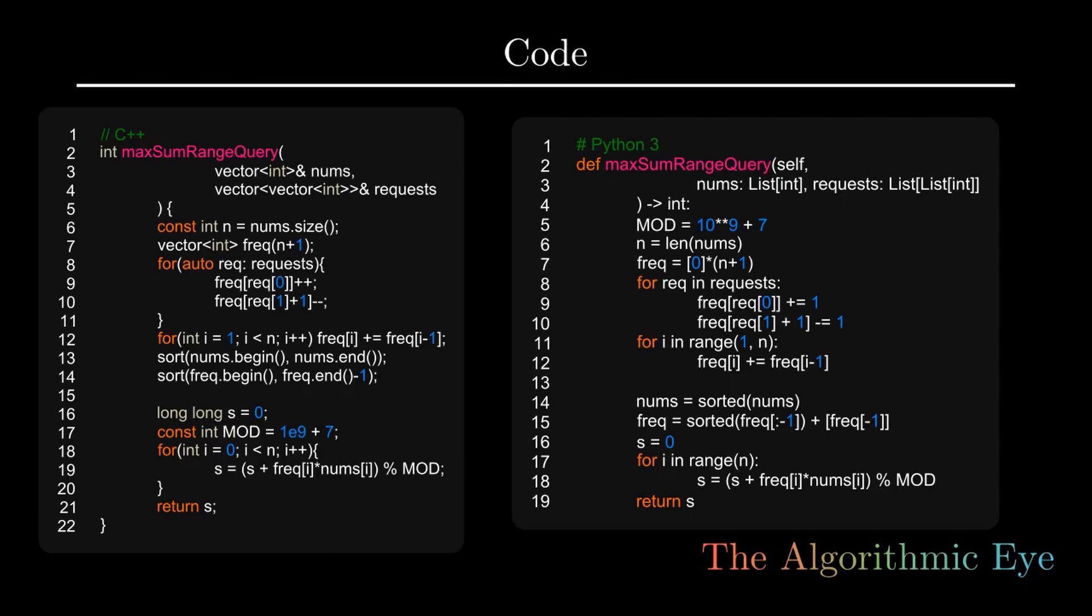Then we sort both nums and our frequency array, and we take the variable s to denote the sum. We take the sum of their products of corresponding indices of nums and frequency, and then we finally return s. So the code is pretty self-explanatory.